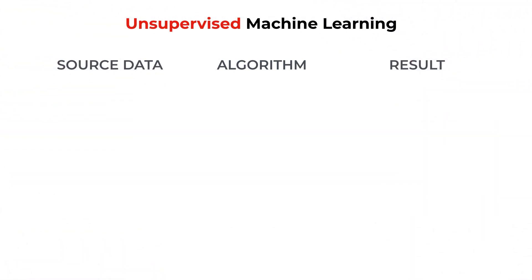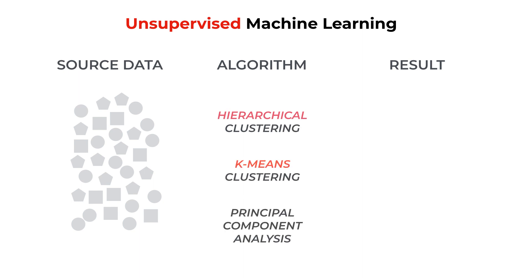With unsupervised machine learning methods, we start with a data set, typically a table of elements, such as these shapes. We can use a clustering method, for example hierarchical clustering, which is a method that seeks to identify groups based on their similarities.